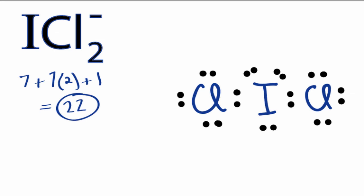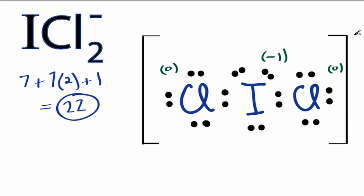So, this is the Lewis structure for ICl2-. If you check the formal charges, you'll note that there is a negative charge on the iodine, and the chlorines both have a formal charge of 0. Since we do have a negative charge here, this negative charge makes sense, we should put brackets around this molecule to show that it is an ion. And we'll put our negative charge right there, and we're done. That's the Lewis structure for ICl2-.